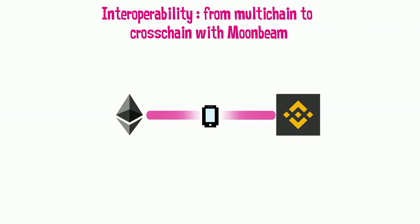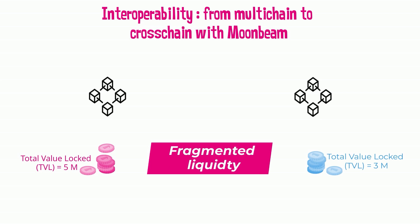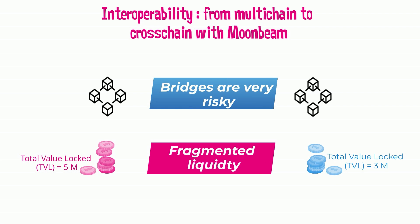The lack of interoperability is one of the most important challenges the crypto world is facing. In fact, this lack of communication causes fragmentation of resources and liquidity. In particular, each chain requires its own TVL and the use of bridges, bridges being a huge security issue.